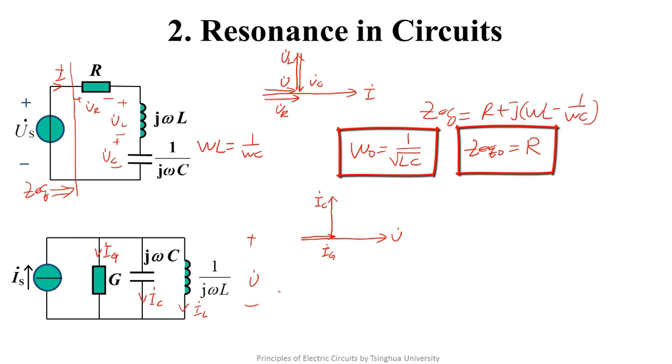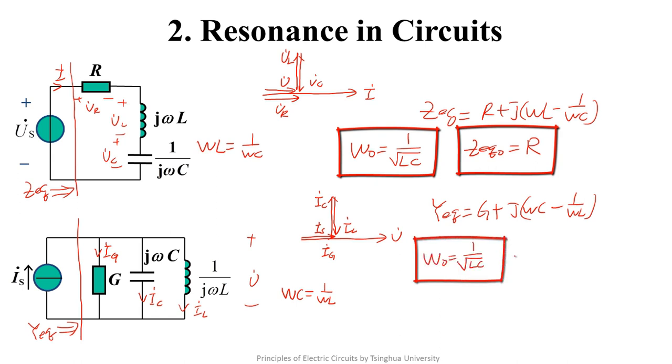If omega C equals 1 over omega L, the phasor graph is like this. So the voltage and the current of the port are in phase. Similarly, we can get the input admittance seen from the source port. Similar to the derivation of the serial RLC circuit, we can also get the condition of the parallel resonance of the RLC circuit like this. The input admittance of the resonant circuit is this.